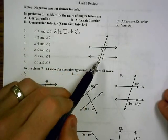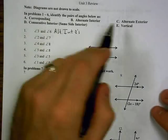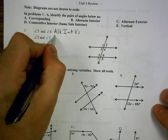Angles 2 and 7 are outside the two lines on opposite sides, so that would be alternate exterior angles.